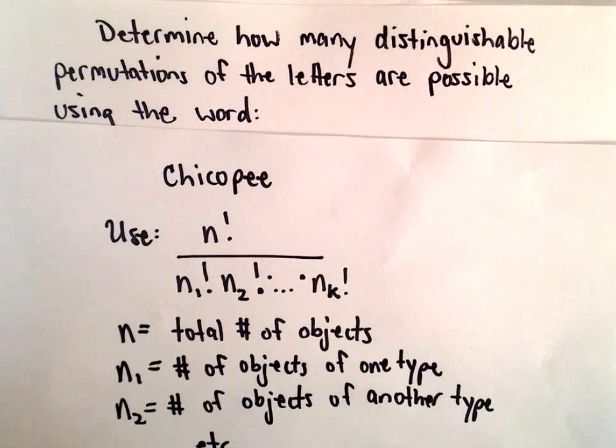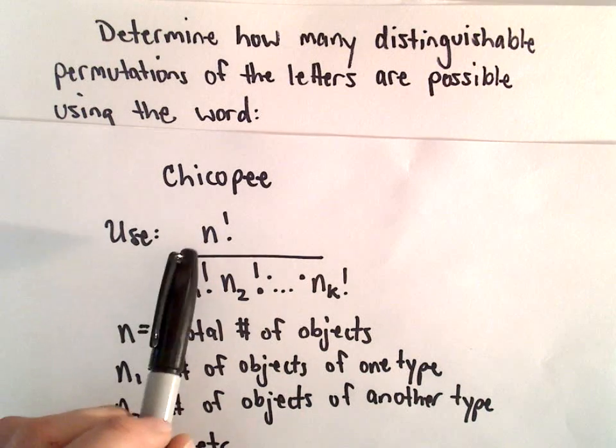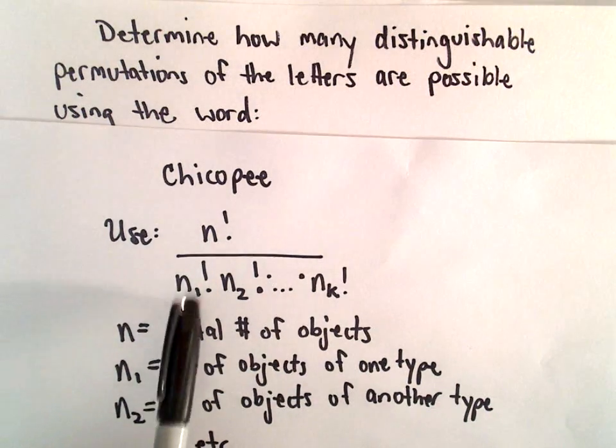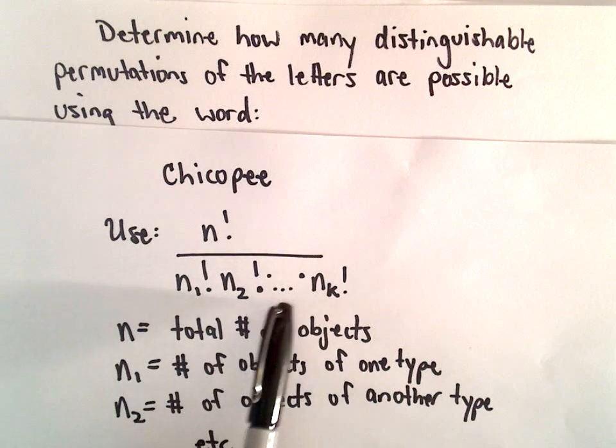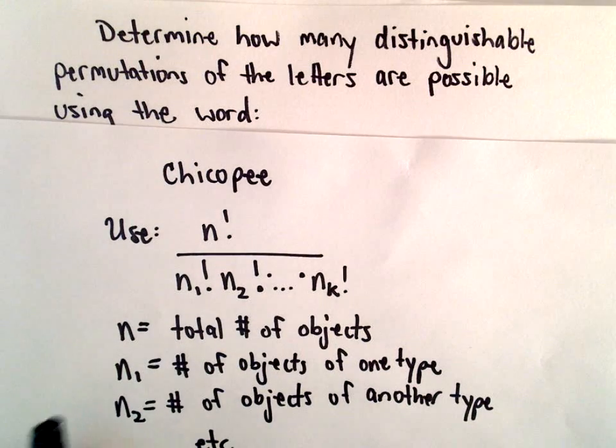This is a little town in Massachusetts, so we're going to use the formula n factorial divided by n sub 1 factorial, n sub 2 factorial, dot dot dot, up to n sub k factorial.